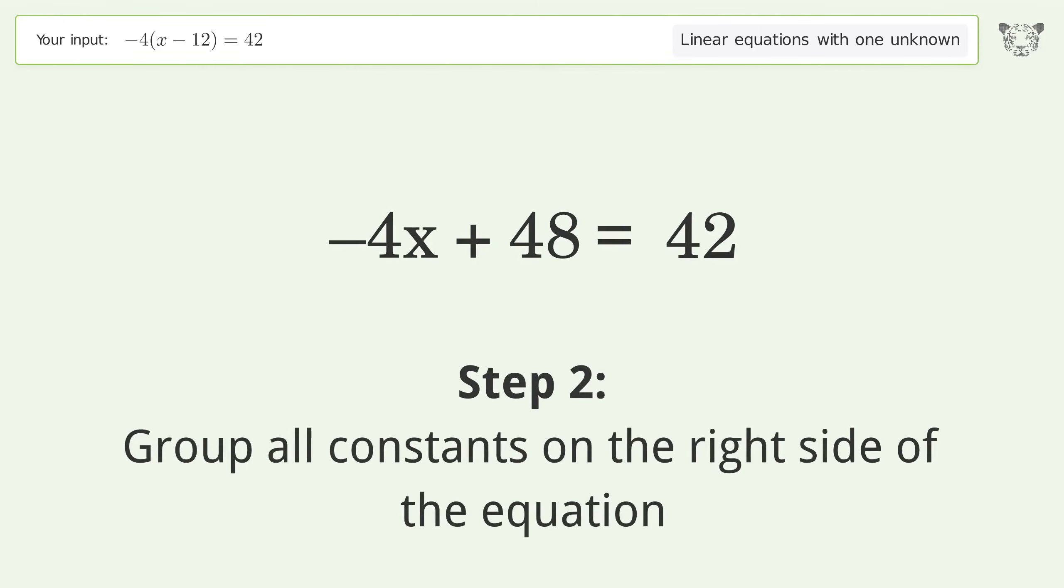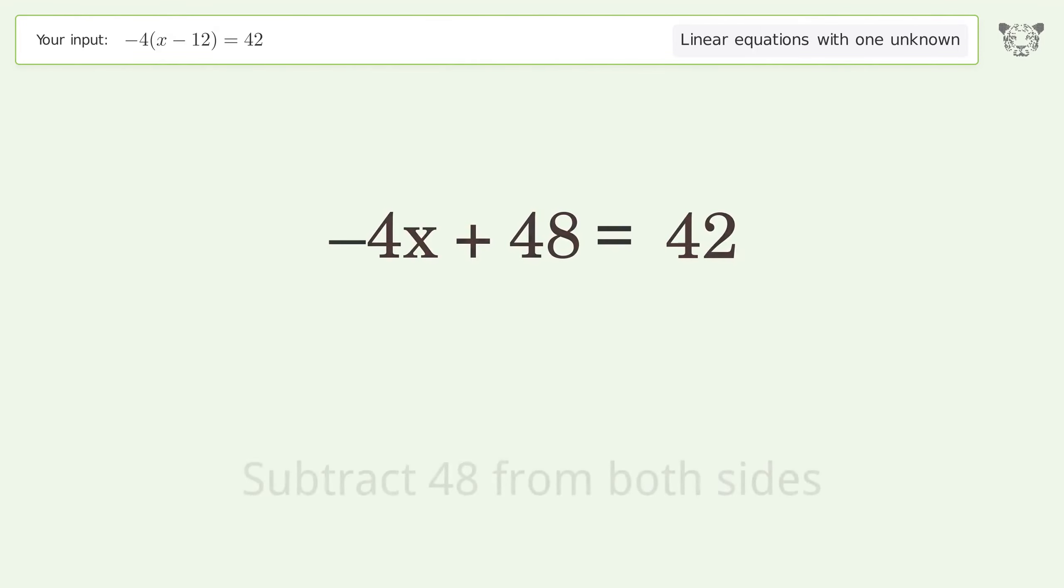Group all constants on the right side of the equation. Subtract 48 from both sides. Simplify the arithmetic.